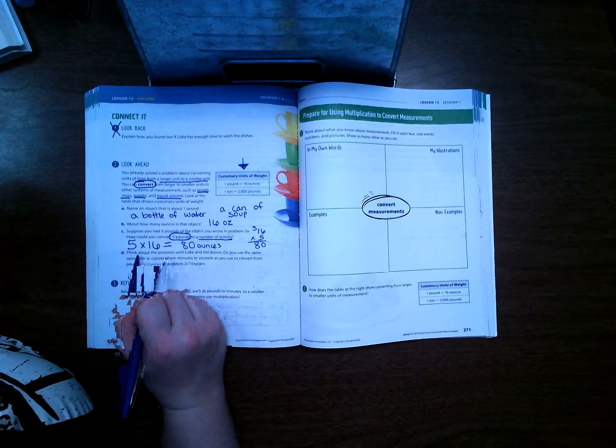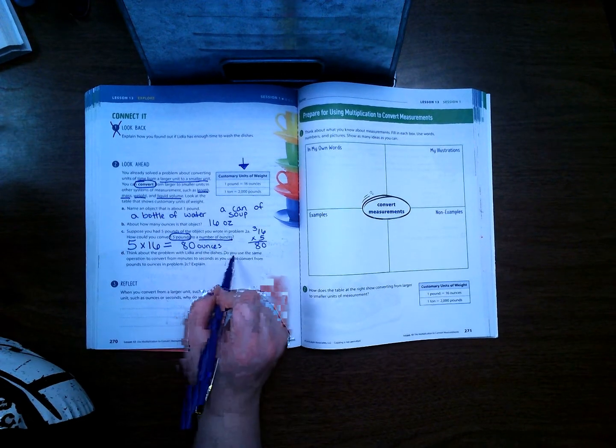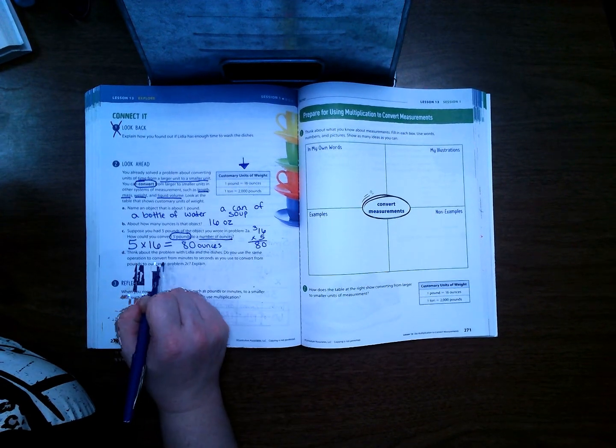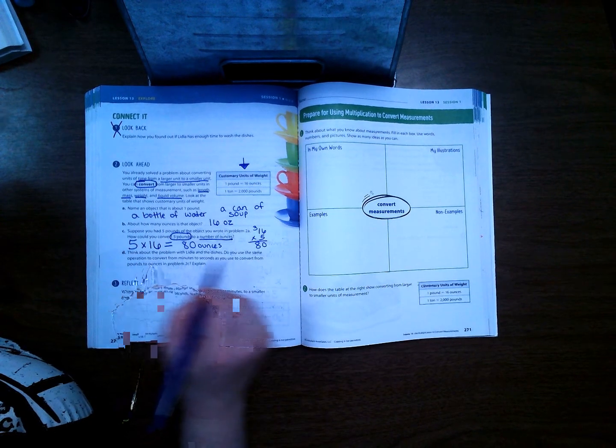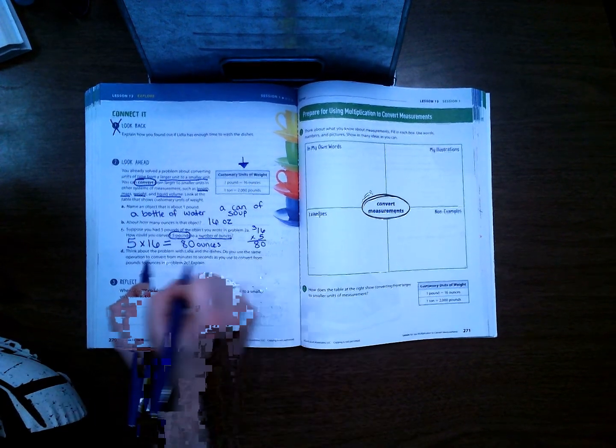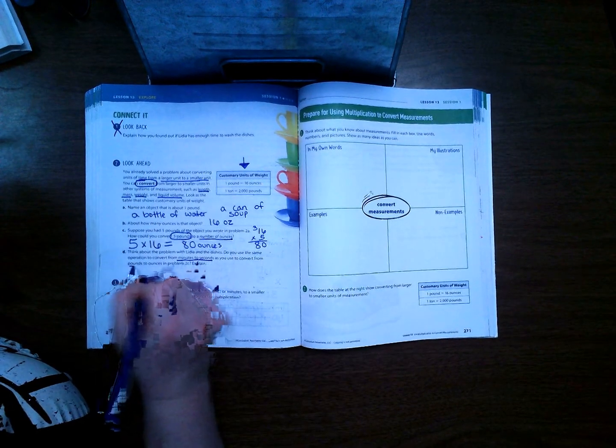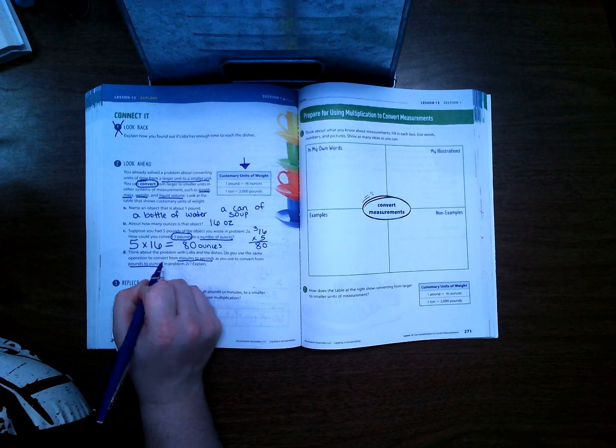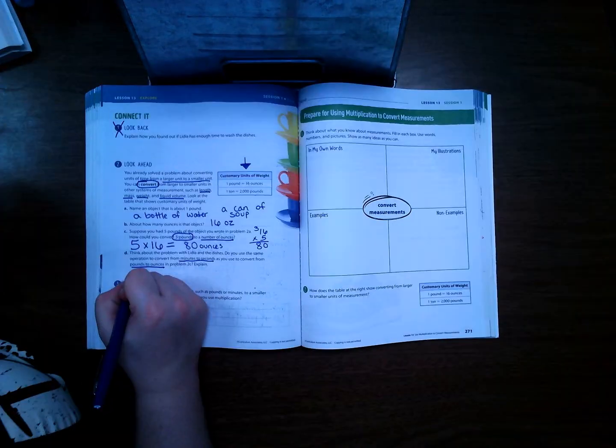Think about the problem with Lydia and the dishes. Do you use the same operation to convert from minutes to seconds as you use to convert from pounds to ounces? So on the previous page we did minutes to seconds, and on this page we did pounds to ounces. But in both cases we multiplied or can use a table, so yes.